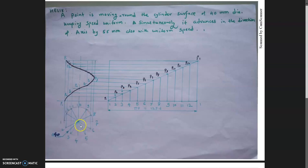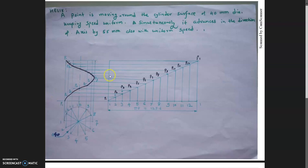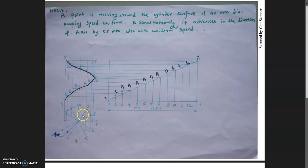The method is: first draw the circle having the given diameter, divide the circle into 12 equal parts — that is a 30 degree angle each. Then project all points 1, 2, 3, 4, 5, 6, 7 onto the rectangle, which is divided into the same number of parts. This rectangle is the development of the lateral surface. The circumference is approximately 125.6 mm, divided into 12 equal parts.